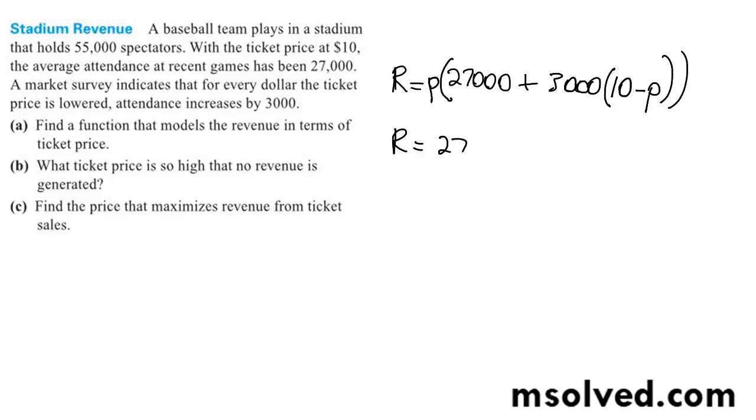to 27,000P plus 30,000 minus 3,000P. And then this is going to be squared.